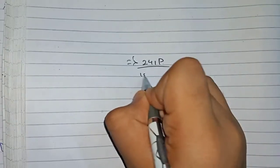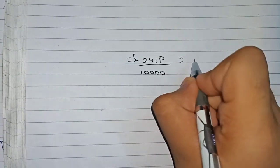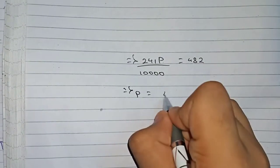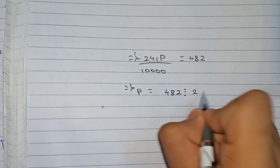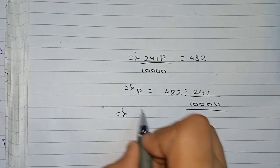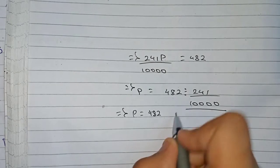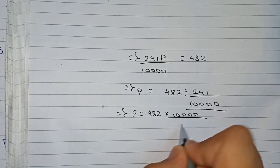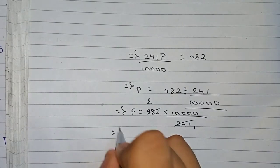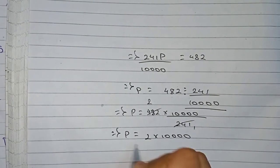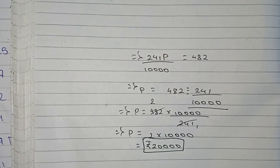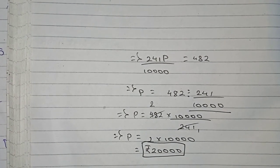So 241P/10000 = 482. Therefore P = 482 × 10000/241. Since 482/241 = 2, principal equals 2 × 10000 = ₹20,000. Therefore the sum of money lent out is ₹20,000. Thanks for watching this video — please subscribe to my channel for more solutions.